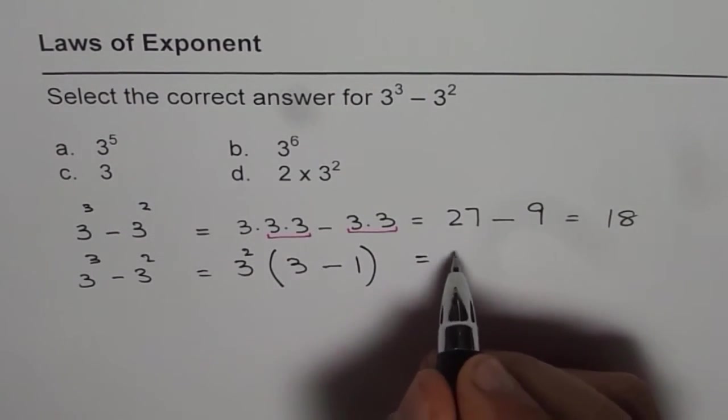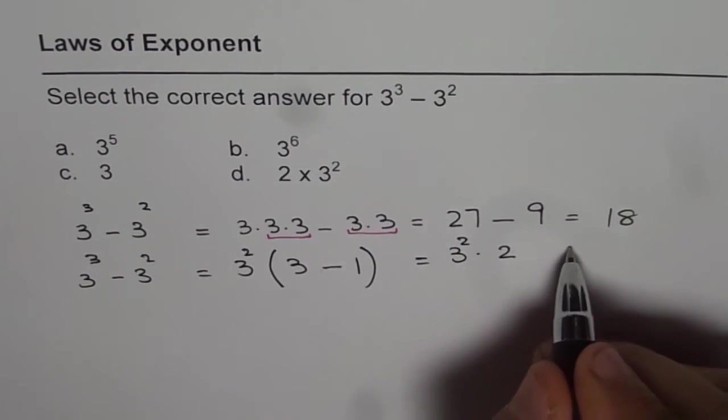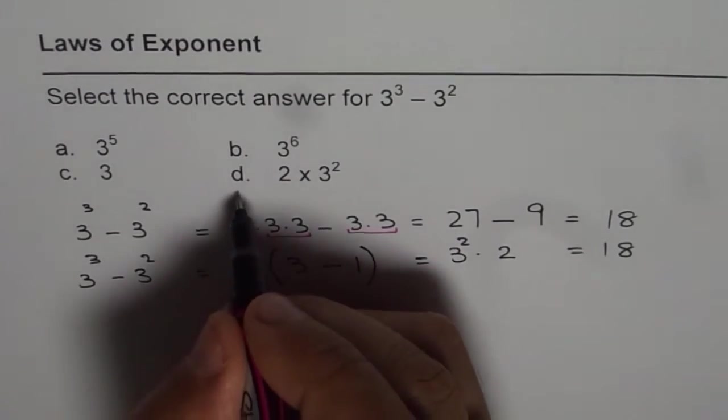So, that gives us 3 squared times 3 minus 1 is 2. So, 2 times 3 squared, which is also 18. It has to be the same thing. So, that is the correct choice.